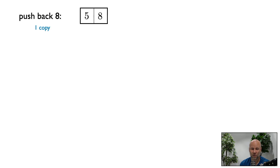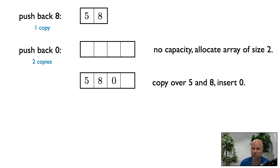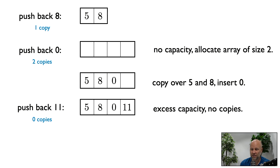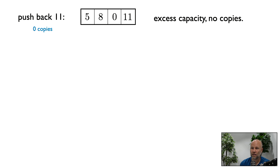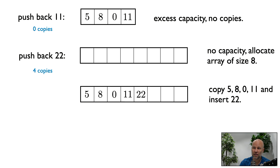Now our fixed size array of size two contains 5 and 8 with no excess capacity. For the next pushback of 0, we allocate a new array of size four, copy 5 and 8 over — that's two copy operations. Then we push back 11: there's excess capacity, so zero copies. Finally, we push back 22: no excess capacity, so we allocate a new array of size eight and copy over the four elements — four copy operations.